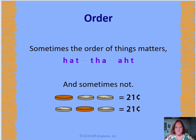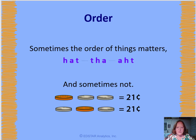For example, we have three letters: H, A, and T. If we rearrange them and put them in different orders, that matters, because only the first arrangement spells 'hat.' The others aren't even words. So with letters, the order matters.